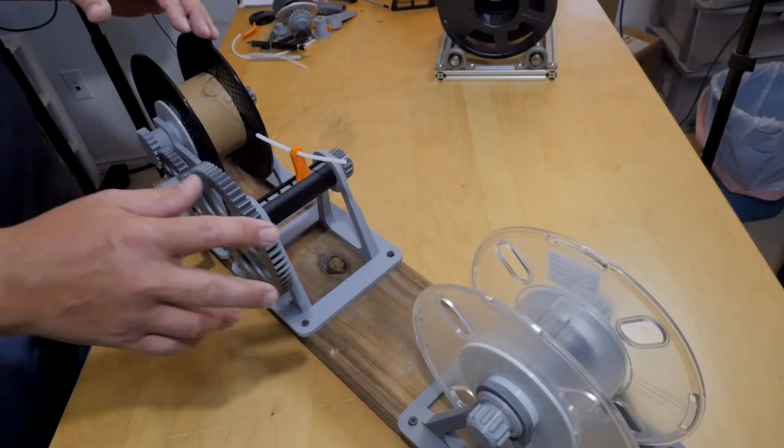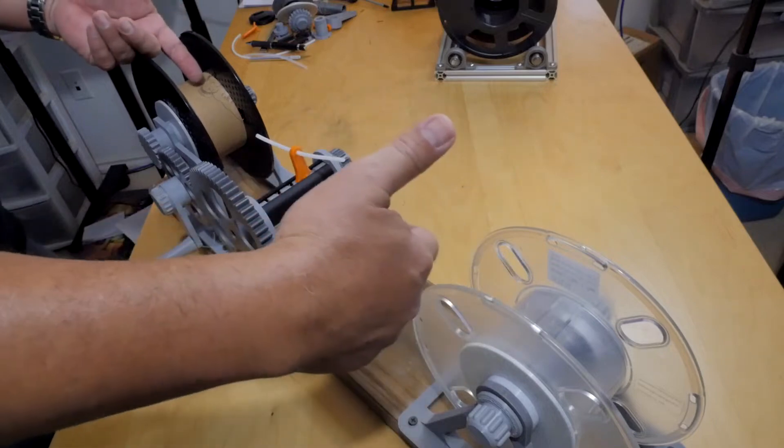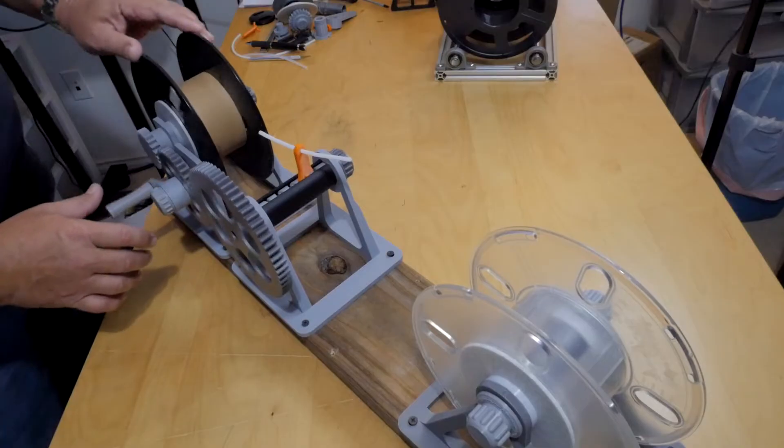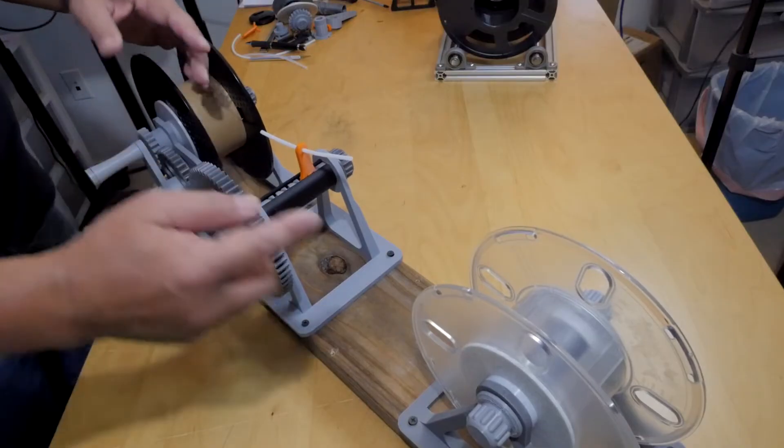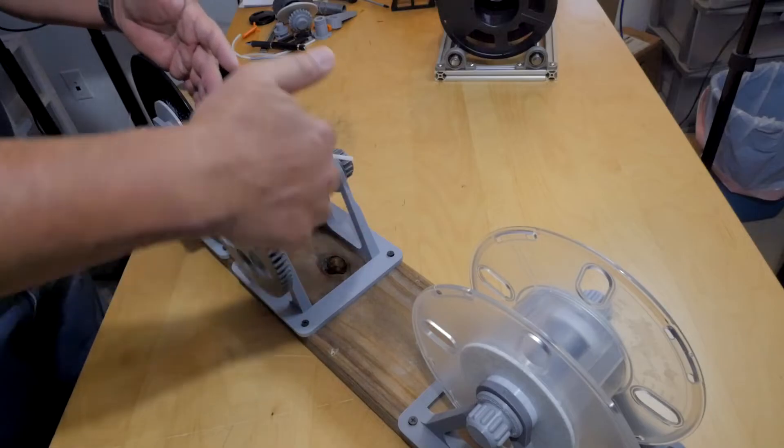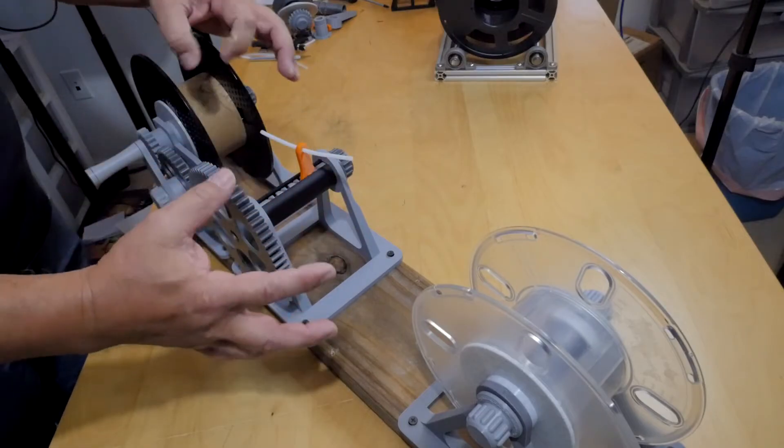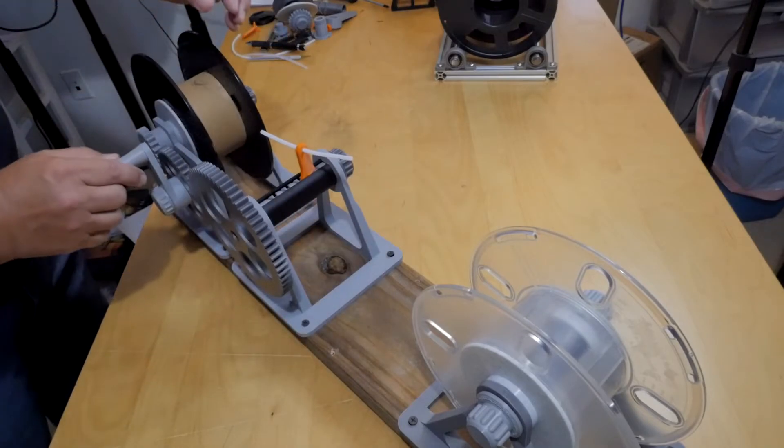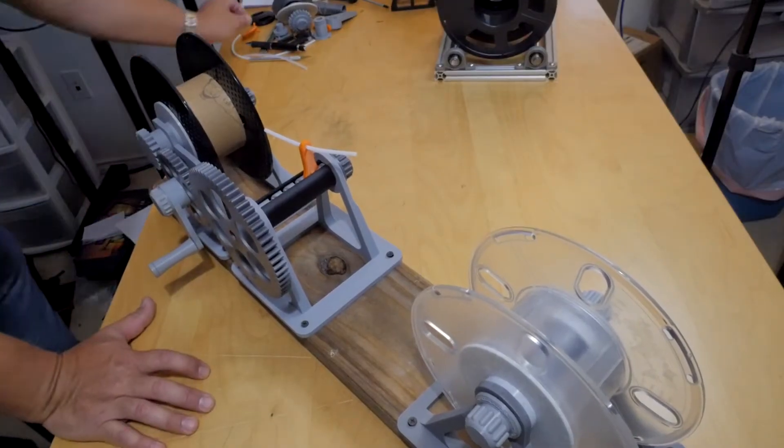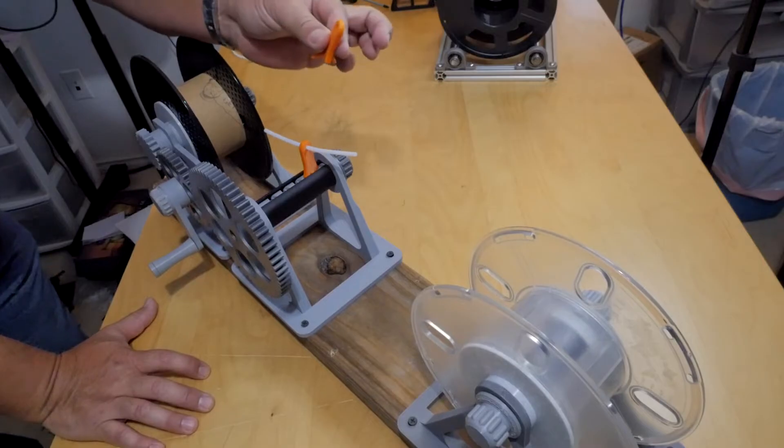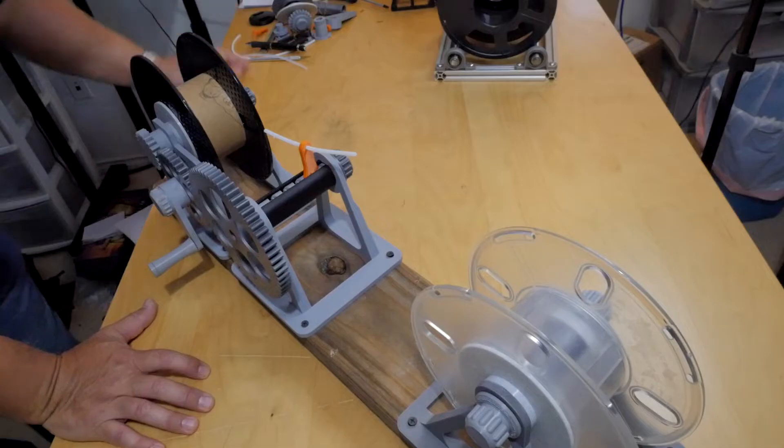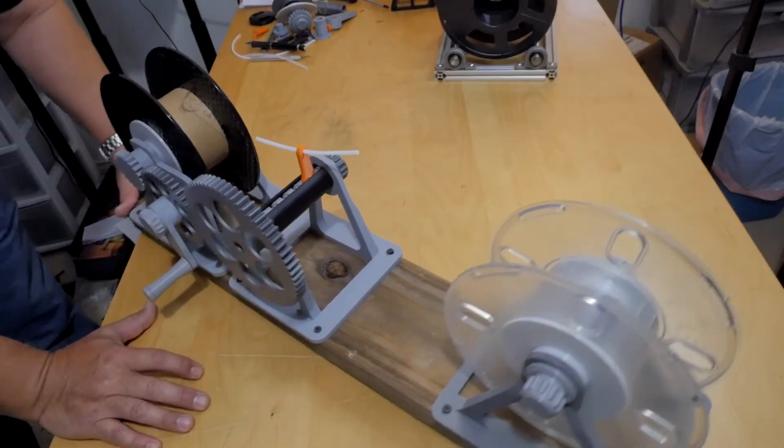I noticed when transferring the filament from the donor over to the final drive, if there's not enough tension the filament is still kind of in a wound state and all curved, and it doesn't transfer that well. I did two versions, one with the PTFE tube and one without, so you can do either or.